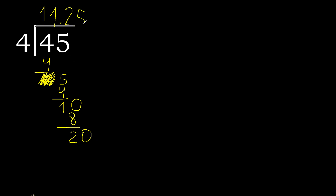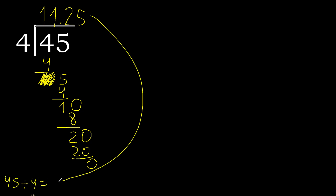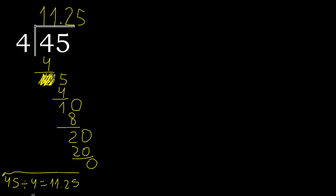4 multiplied by 5 is 20 — 20 is not greater. Subtract: 20 minus 20 is 0. Therefore finish. 45 divided by 4 is 11.25.